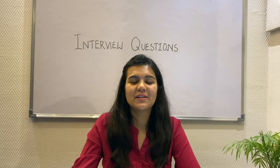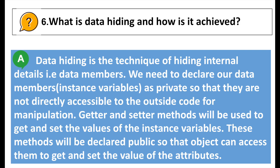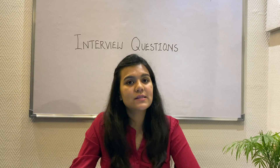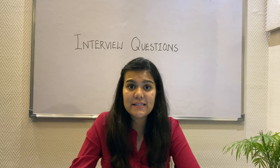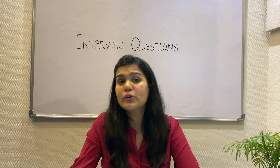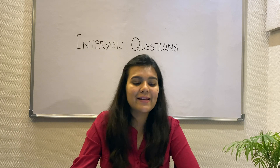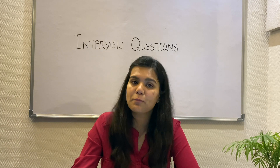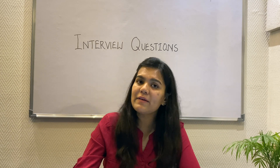Moving on to the next question: What is data hiding and how is it achieved? Data hiding is the technique of hiding the internal details — the data members of a class. We need to declare our data members, often known as instance variables, as private so they are not directly accessible to outside code for manipulation. Imagine a car has gear as its attribute and someone sets the gear attribute to zero — a car with no gears is not possible.